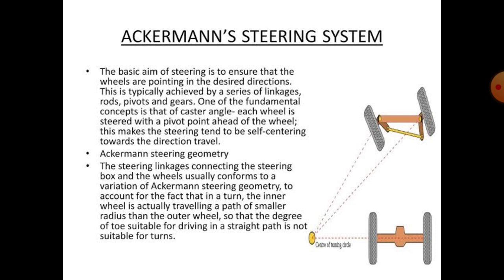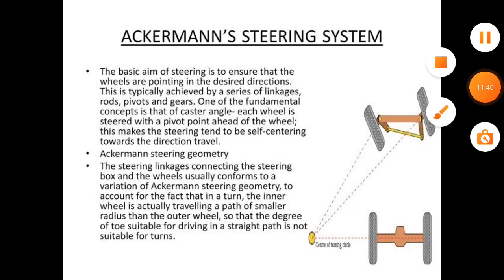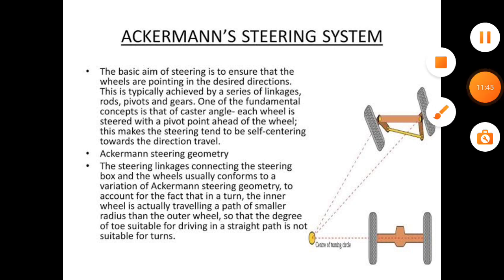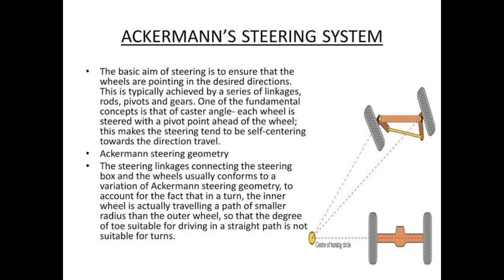Simply put, when the vehicle turns, the outer wheel travels more than the inner wheel. At that time, the degree of turning — the angle between the wheels — is greater, so the straight-path setting is not suitable for turning. This is the basic steering mechanism of the steering system. In the next lecture, we will study steering geometry.